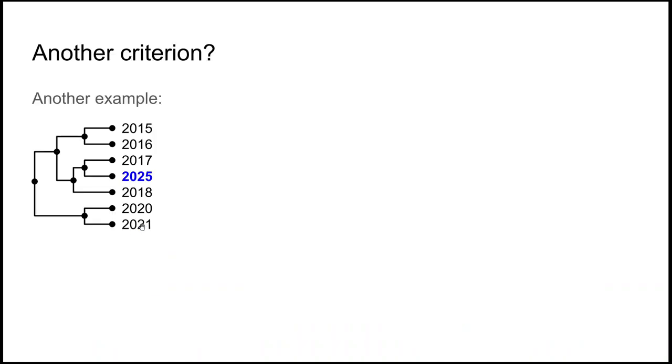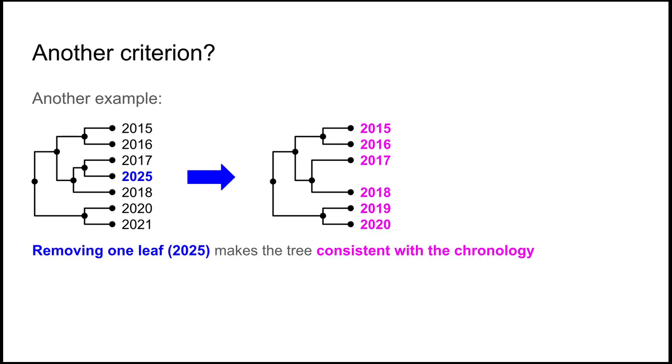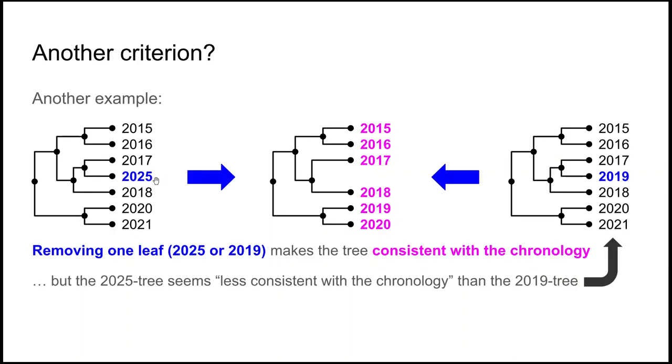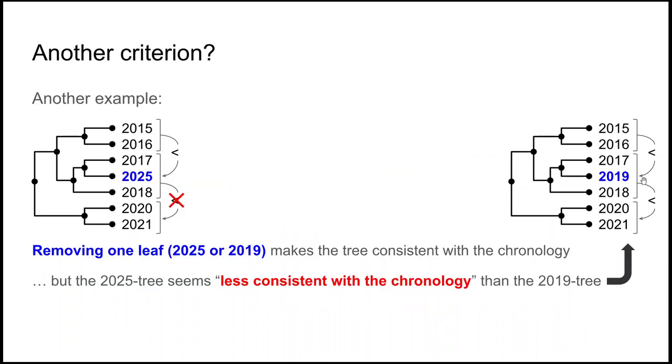But let's see another example. If I change 2019, I replace it by 2025. Well, I still need to remove only one leaf. But this tree on the left seems to be a bit less good than the one before. I put the one before here on the right. You see that on the one before, you had nice intervals of years. This interval before this one, before this one. This is not the case anymore here, because here, in the second interval, you have this date, which is bigger than the ones below. So it seems that the tree on the left is less consistent with chronology than the one on the right. And we would like to have a criterion to express this.